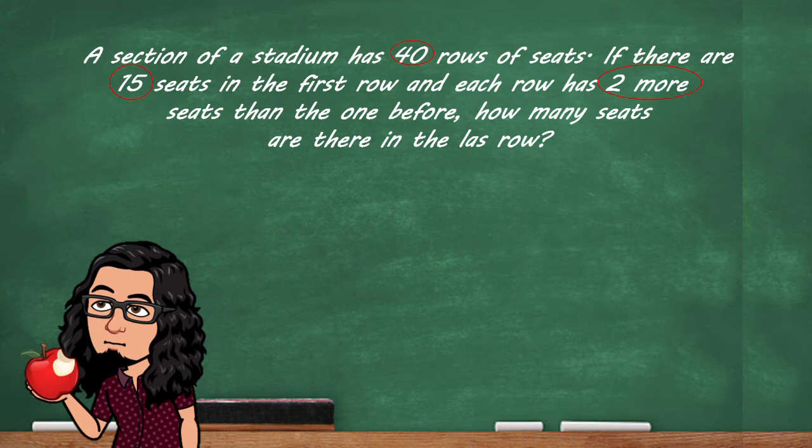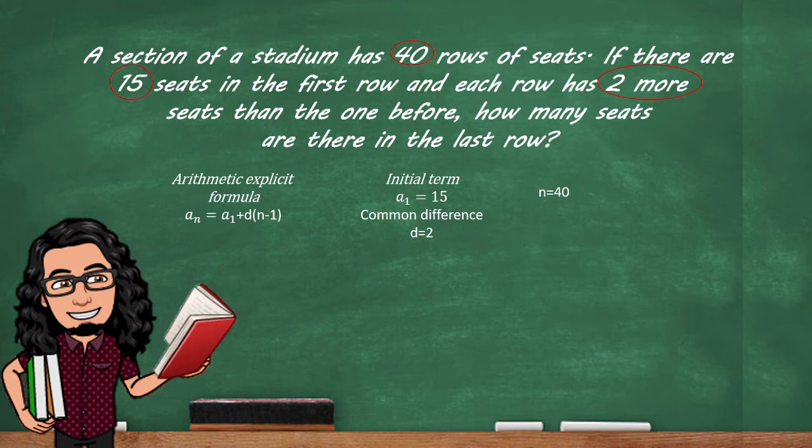So here is our formula. A sub 1 is gonna be equal to our initial term that is 15, 15 seats in the first row, and our common difference 2 because we have two more seats than the one before. And since we are looking for how many seats are there in the last row, n is gonna be 40.